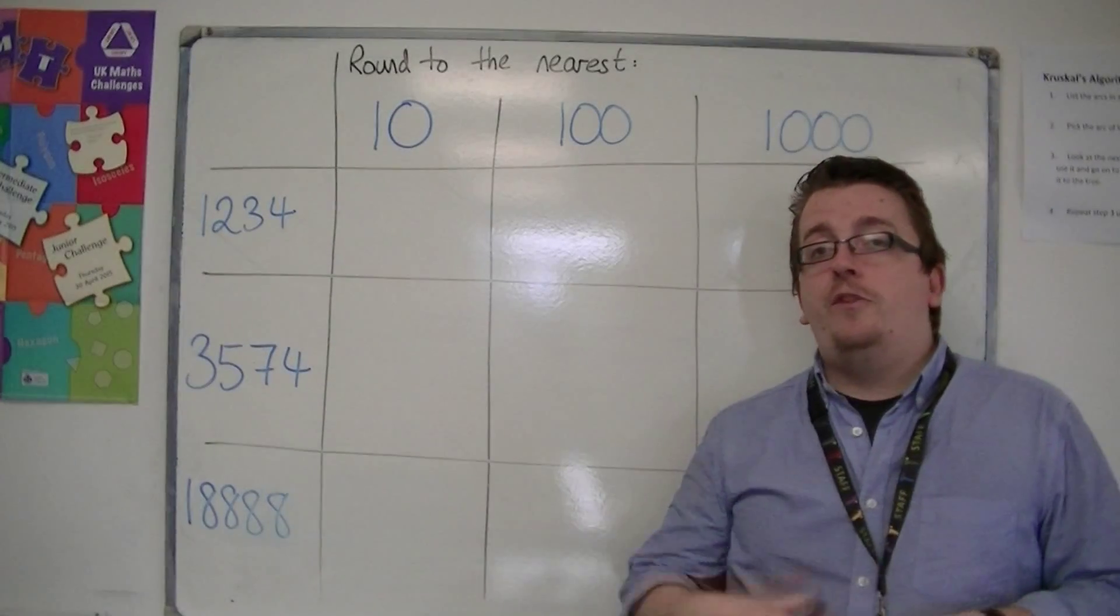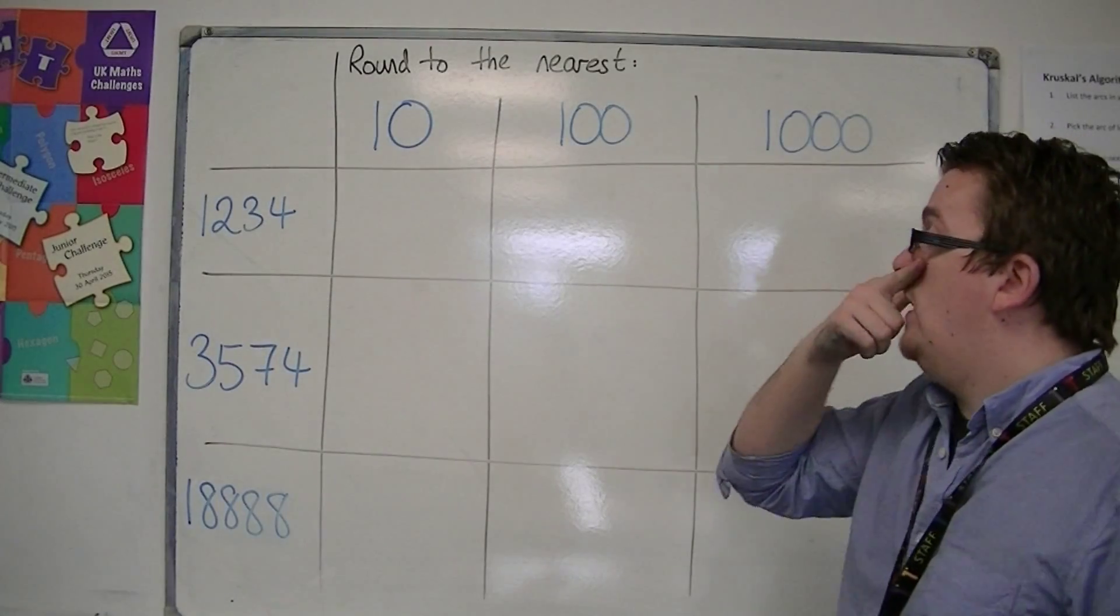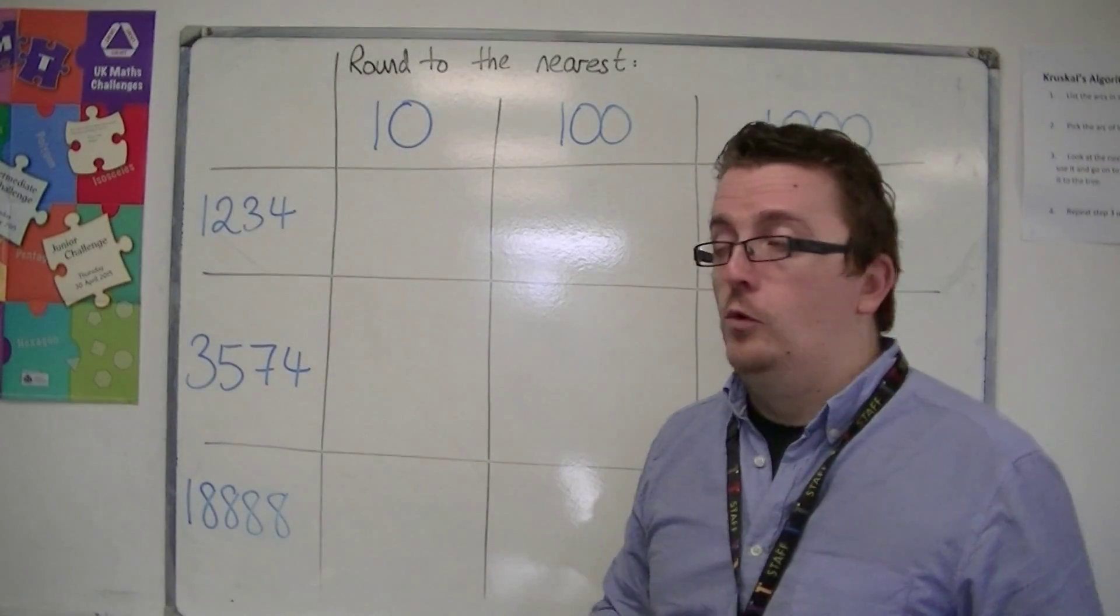So what I'm going to do is I'm going to look at each number in turn and round them to ten, hundred, and thousand each time, so you can see how the pattern forms.